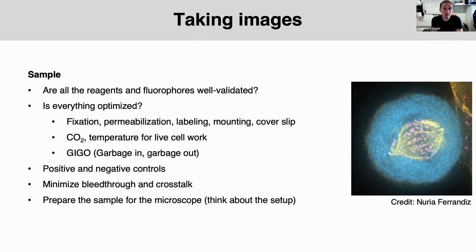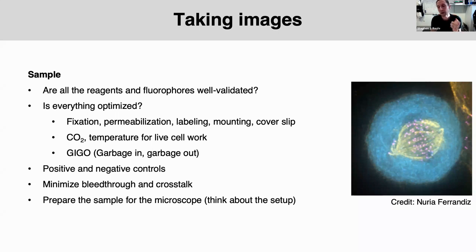You need positive and negative controls. The negative control should always be in your experiment; a positive control if you have one. You need to minimize bleed-through or crosstalk — for example, secondary antibodies giving crosstalk. You also need to think about the microscope setup: does it have the right filter sets? Perhaps it doesn't have a red filter, so you need to use green and far red. Think about the setup as you do your experiment so you can image your sample to best effect using the microscope you have access to.